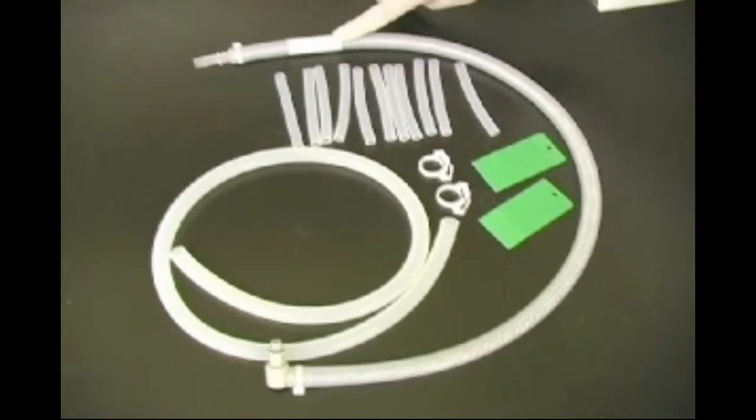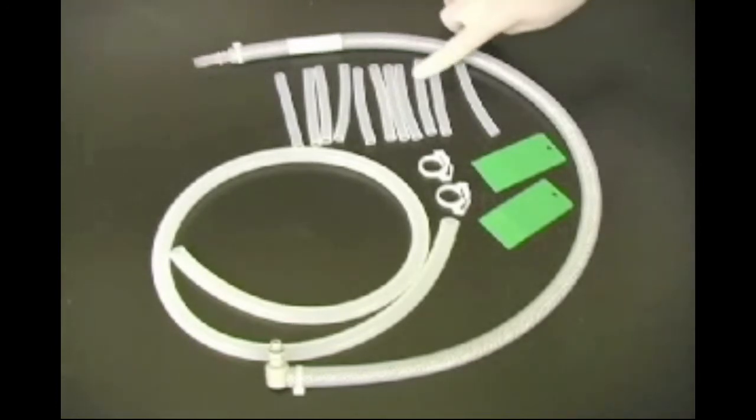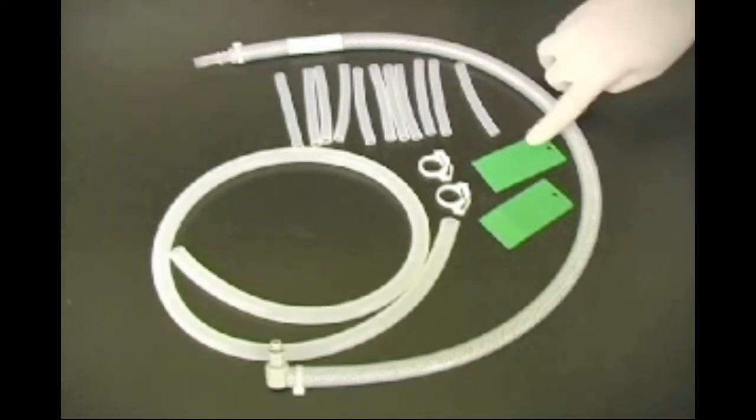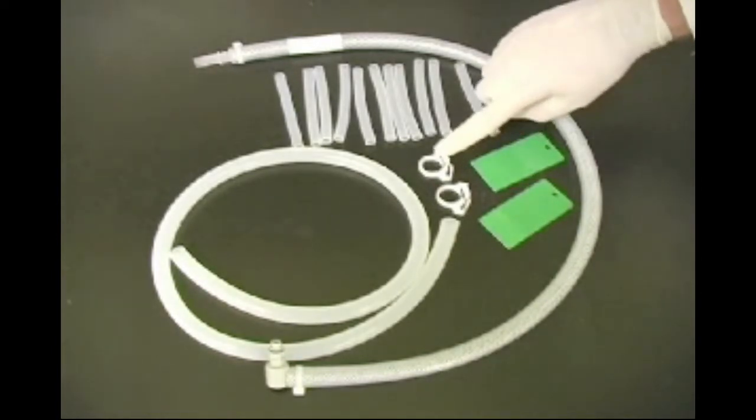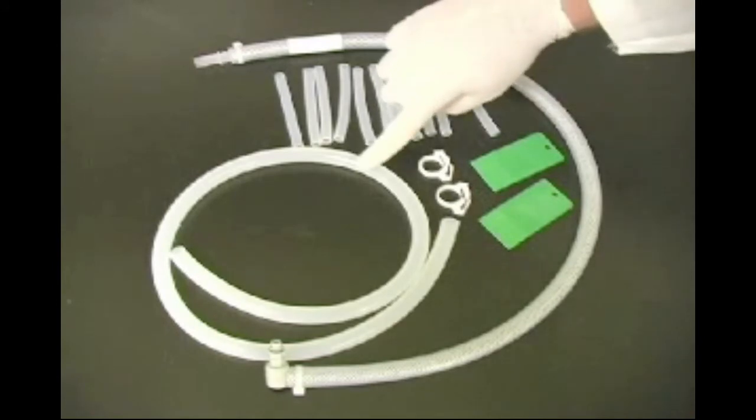Also included are the buffer exhaust tube, which connects the lid of the DodecaCell to the buffer recirculation pump, 11 pieces of manifold tubing for running shorter plates like the Protean 2 precast or handcast gels, gel releasers, hose clamps, and extension tubing that connects to the drain port.